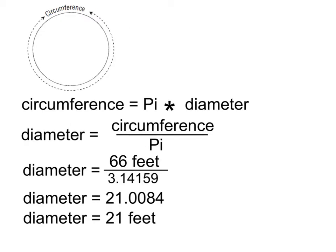And now let's do the math. Remember that the circumference of our bin was 66 feet. Pi is 3.14159, so dividing that out gives us 21.0084, or we can simply round that to 21 feet, which is the diameter of the bin.